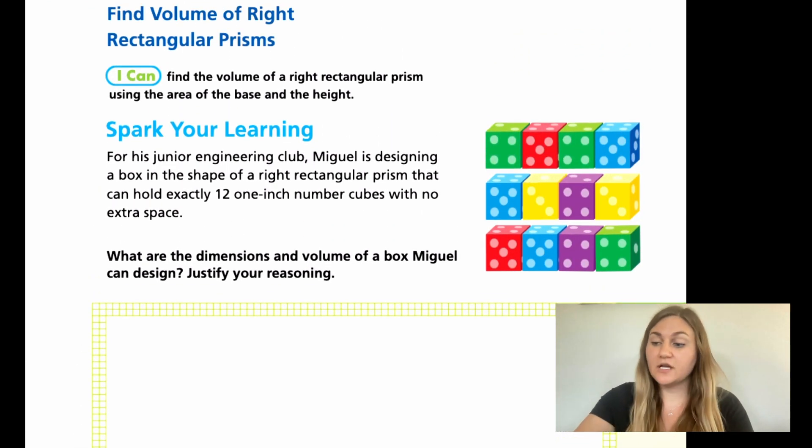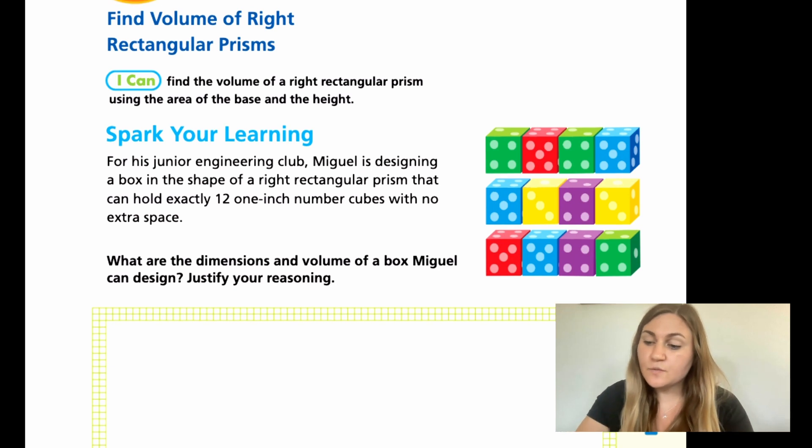Moving on to page 107, we're going to start with the spark your learning. The word problem reads: For his junior engineering club, Miguel is designing a box in the shape of a right rectangular prism that can hold exactly 12 one inch number cubes with no extra space. So what are the dimensions and volume of a box Miguel can design? Justify your reasoning. I know that if there's 12 one inch number cubes, that my volume is going to be 12.